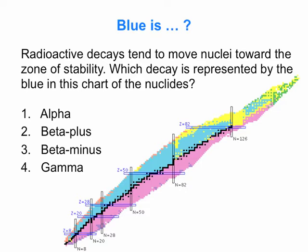Those colors represent different decay types. So what do you think blue, the light blue, represents in the chart of the nuclides? Alpha decay, beta plus decay, beta minus decay, or gamma decay? Puzzle over that for a second, and then we'll reveal the answer.